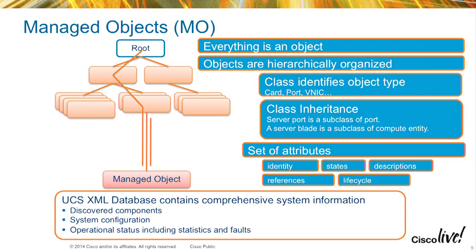Automatic issue remediation is another use case. Maybe I want to monitor UCS for a certain fault type and then take action if that particular fault occurs — maybe a hardware failure, where I'd like to monitor for that failure and move a service profile from one piece of hardware to another. We take all the logical configuration for a server and capture it in an XML construct. When hardware fails in the middle of the night, we can take that XML construct and move it from one physical server to another, basically programming a new server to look just like the one that failed.